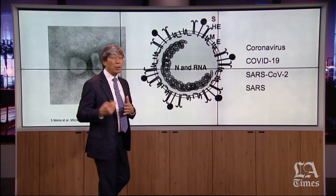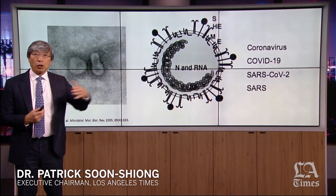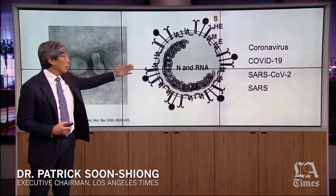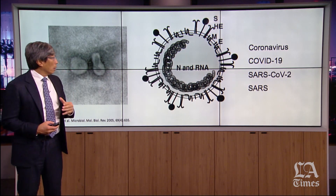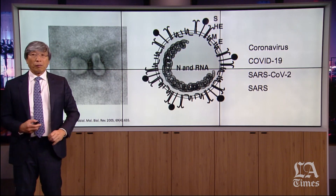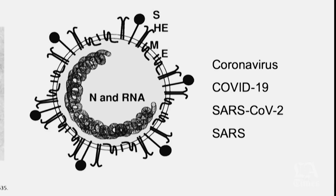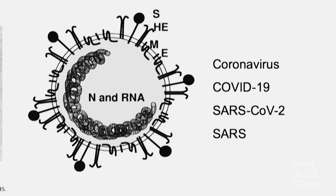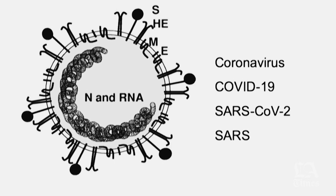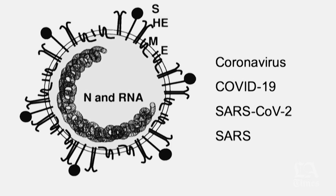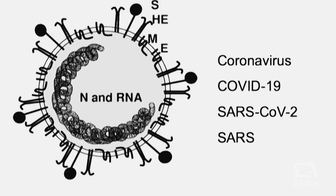This virus is an RNA virus. The genetic signature inside this virus — that little curly — is made of RNA that can reproduce. Most importantly, the virus has on its surface an envelope or capsule, and you see the spikes. The spikes form a crown, and that's why it's called coronavirus.